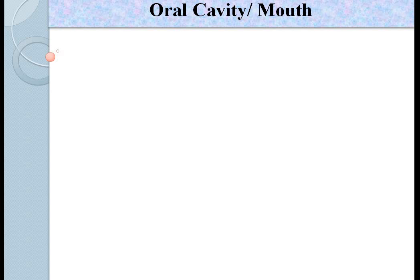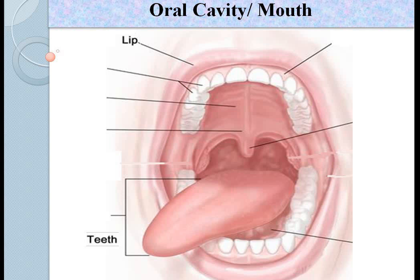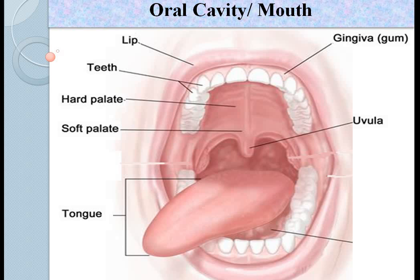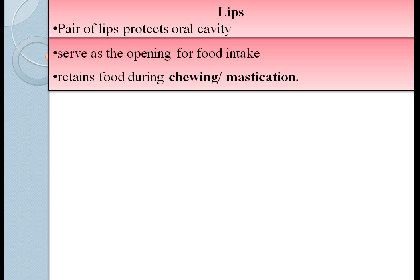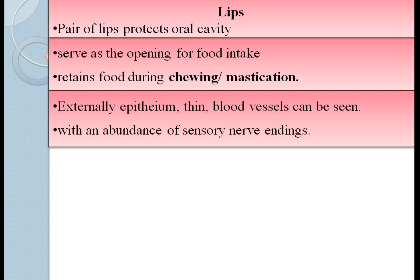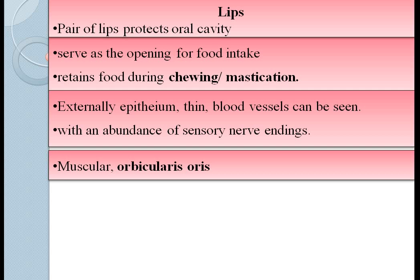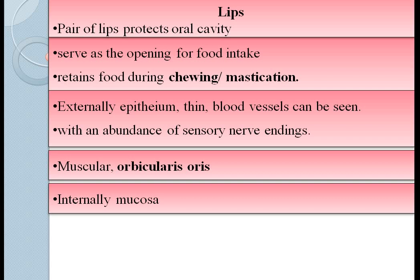The process of digestion begins in the oral cavity, that is the mouth. The oral cavity includes lips, teeth, gingiva (that is gum), hard palate, soft palate, uvula, tongue and the floor of the mouth. Lips protect the oral cavity; they serve as an opening for food intake and retain food during chewing, which is also called mastication. Externally, lips are lined by a thin epithelium through which blood vessels can be seen — that is why lips are pinkish in coloration. The epithelium also has an abundance of sensory nerve endings. Lips are composed of muscles called orbicularis oris, and internally they are lined by mucosa. Cheeks are composed of buccinator muscles and form the lateral walls of the oral cavity.